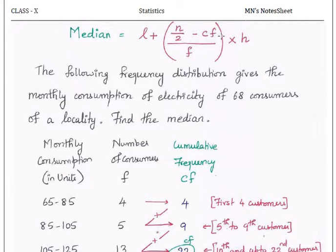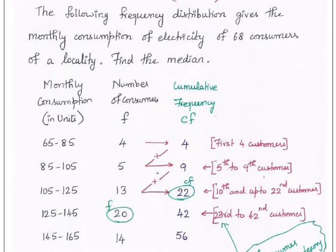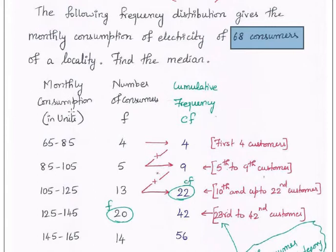The next problem: the following frequency distribution gives the monthly consumption of electricity of 68 consumers. So N is 68, that is sigma F is 68. You have to find the median. In 4 households, 65 to 85 units monthly consumption is there. In 5 households, 85 to 105 units of electricity consumption is there, and so on.